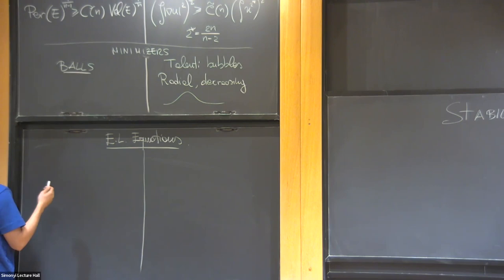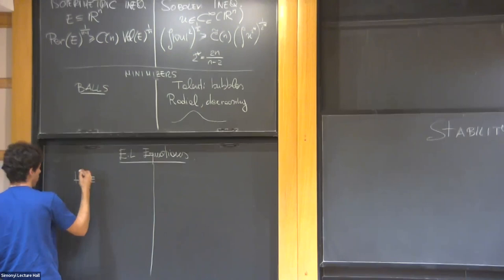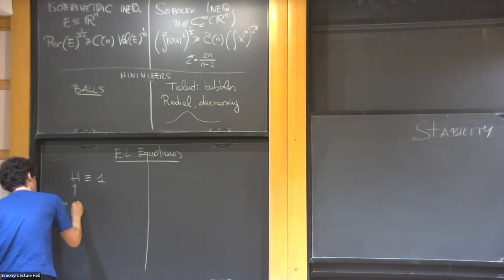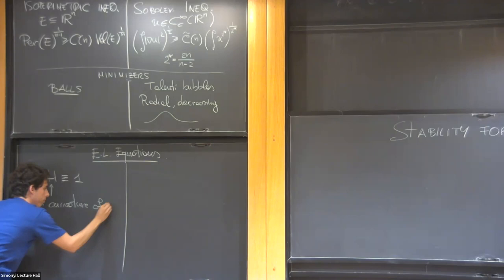And once you have a functional, and you want to study the minimizers, it makes sense to compute the derivative, and this is what I call Euler-Lagrange equation. So the stationarity condition. Here, it's H up to scaling, H equal to 1. This is the mean curvature of the boundary.